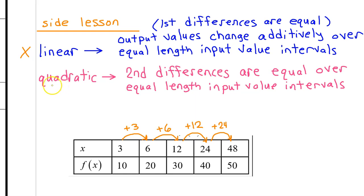We have learned that a quadratic model is best if the second differences are equal over equal length input value intervals. But again, we do not have equal length input value intervals, so a quadratic model will not be best either.